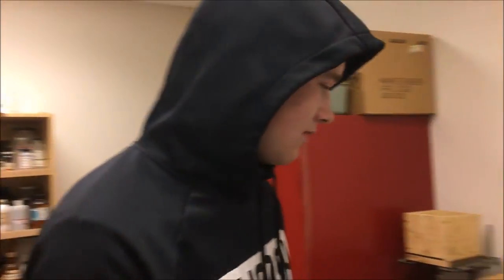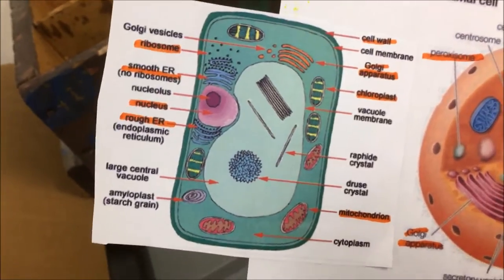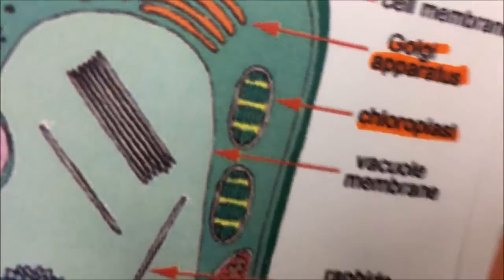Chloroplast would be found in the plant cell — you're gonna find chloroplast in the cell wall area. You can see it right here underneath the Golgi apparatus. Chloroplast is a chlorophyll-containing organelle bounded by a double membrane, involved in photosynthesis. Found in plants and photosynthetic protists. Also the location of starch, amino acid, fatty acid, purine, and pyrimidine synthesis.